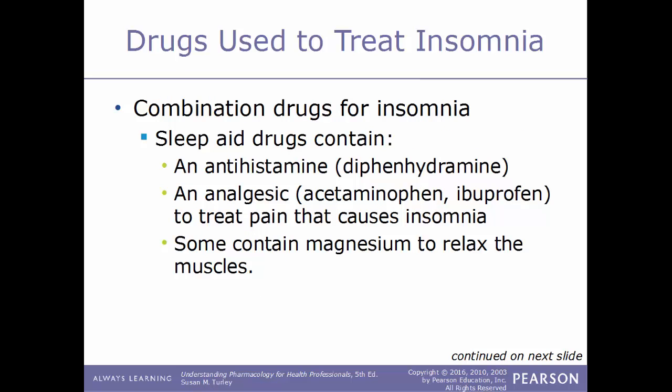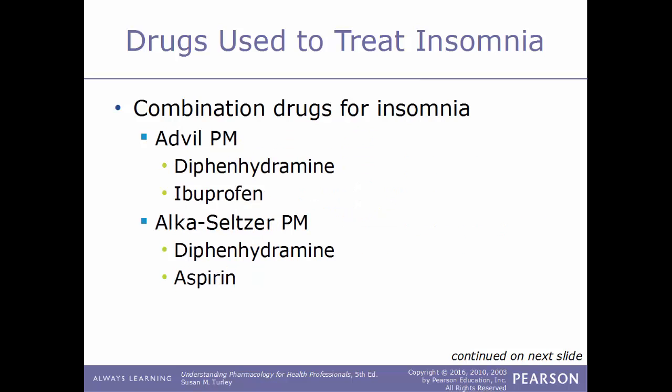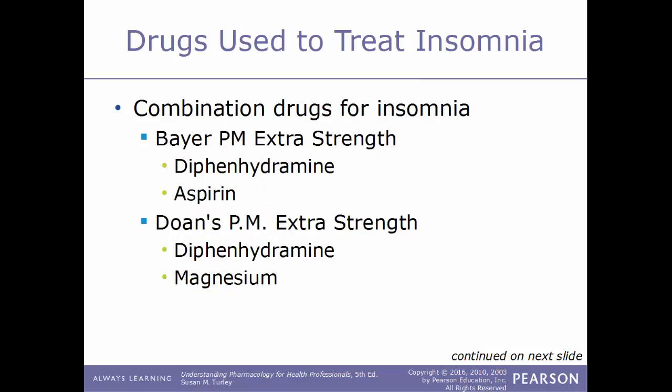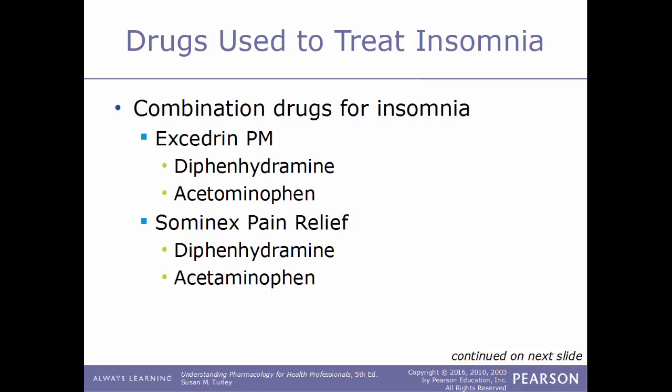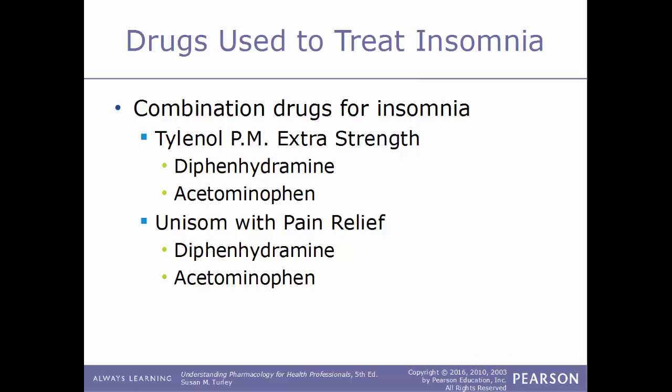Combination drugs are also used to treat insomnia, containing an antihistamine such as diphenhydramine combined with an analgesic such as ibuprofen or acetaminophen to treat pain causing insomnia, and some containing magnesium to relax muscles. Examples include Advil PM (ibuprofen + diphenhydramine), Alka-Seltzer PM (aspirin + diphenhydramine), Bayer PM Extra Strength (aspirin + diphenhydramine), Doan's PM Extra Strength (diphenhydramine + magnesium), Excedrin PM (acetaminophen + diphenhydramine), Sominex Pain Relief (acetaminophen + diphenhydramine), Tylenol PM Extra Strength (acetaminophen + diphenhydramine), and Unisom with Pain Relief (diphenhydramine + acetaminophen).